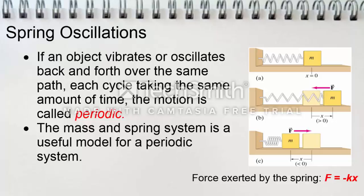Spring oscillations: if an object vibrates or oscillates back and forth over the same path, each cycle taking the same amount of time, the motion is considered periodic. Some examples of periodic motion are a pendulum and the rotation of the Earth. The mass and spring system is a useful model for a periodic system.